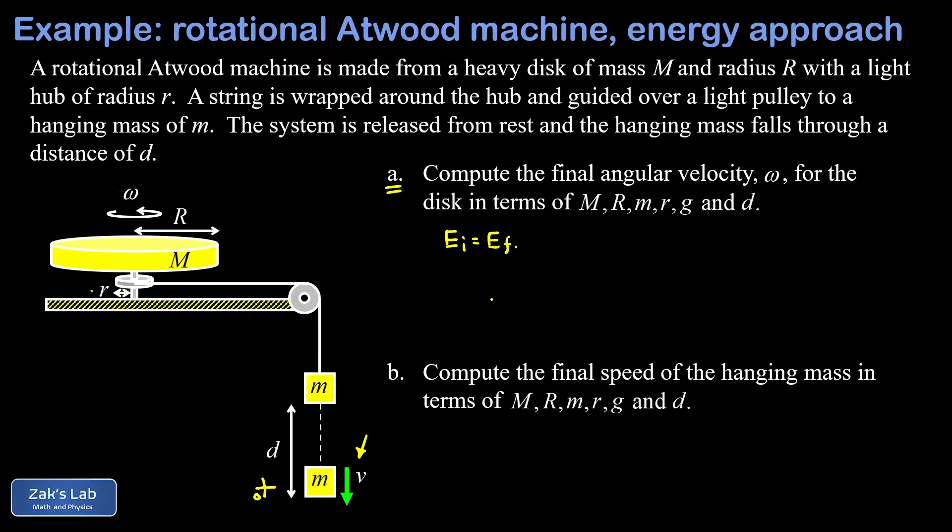That's where the hanging mass is in the final state, and that means the initial gravitational potential energy of this hanging mass is just m times g times d. So our initial energy is very simple, it's just mgd, just that one potential energy term.